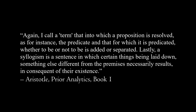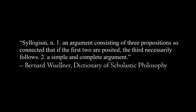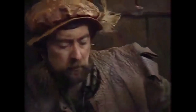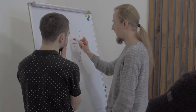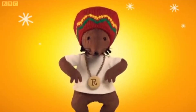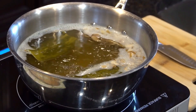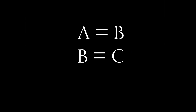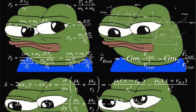A syllogism is a sentence in which certain things being laid down, something else different from the premises necessarily results in consequence of their existence. So: terms make up propositions, and propositions make up syllogisms. A syllogism is the equivalent of an equation in mathematics — a simple equation consists of two numbers with a relational sign followed by a result, and a simple syllogism consists of two premises related by content followed by a conclusion. For example: Raster Mouse is a mouse; all mice are mammals; therefore Raster Mouse is a mammal. Or, boiled down to its simplest expression: A equals B, B equals C, therefore A equals C.